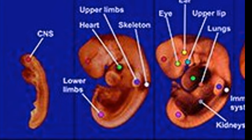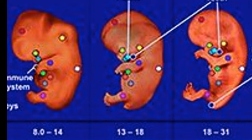In week 6, the baby is about 8 to 14 mm long. Around this week, the immune system begins to form. In week 7, the baby is about 13 to 18 mm long, and the palate begins to form.